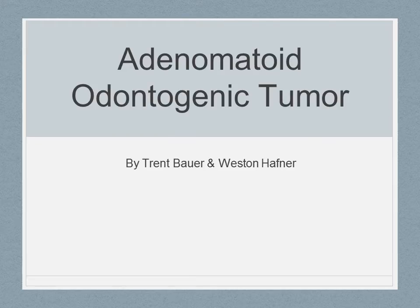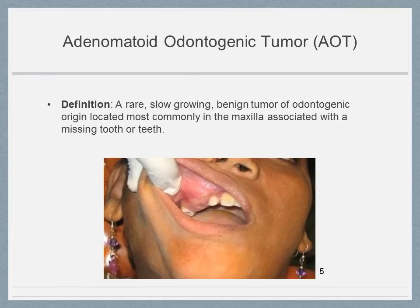Adenomatoid Odontogenic Tumor by Trent Bauer and Weston Hafner. Adenomatoid Odontogenic Tumor, or AOT, is a rare, slow-growing, benign tumor of odontogenic origin located in either the maxilla or the mandible, more commonly in the maxilla. The tumor is comprised of an overgrowth of odontogenic epithelium encased in connective tissue, thereby causing expansion of the bone.